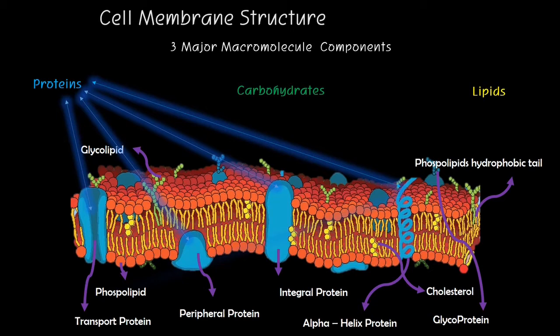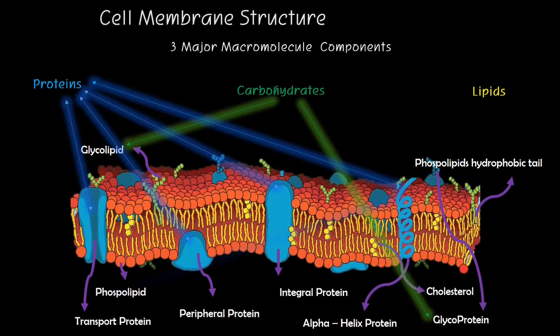Carbohydrates is a combined macromolecule with either a protein or a lipid to create a complex functional status. Carbohydrates include glycoproteins — a combination of sugar and proteins — and glycolipids, a combination of sugar and lipids.